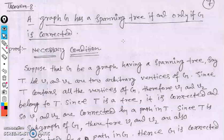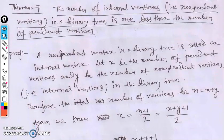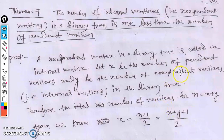We move to the next theorem: a graph G has a spanning tree if and only if... But first, theorem number seven, not mentioned in the previous lecture, states that the number of internal vertices (non-pendant vertices) in a binary tree is one less than the number of pendant vertices.